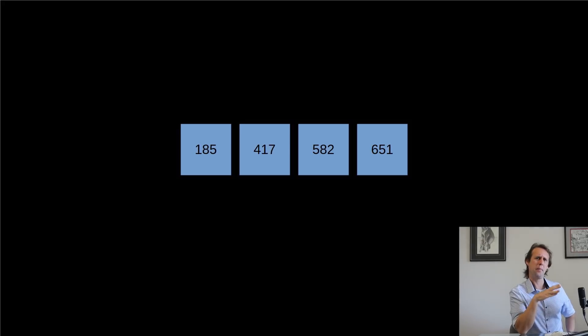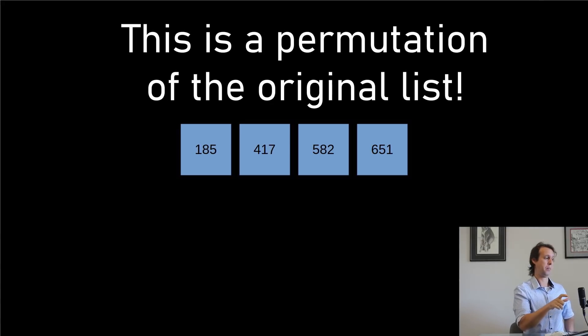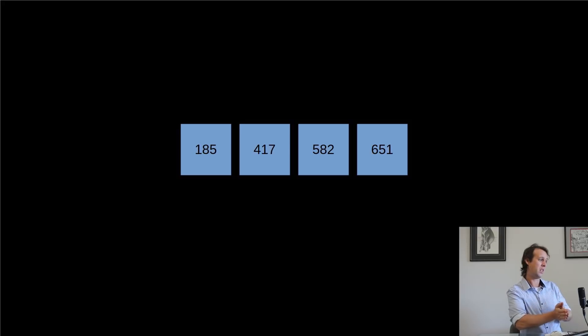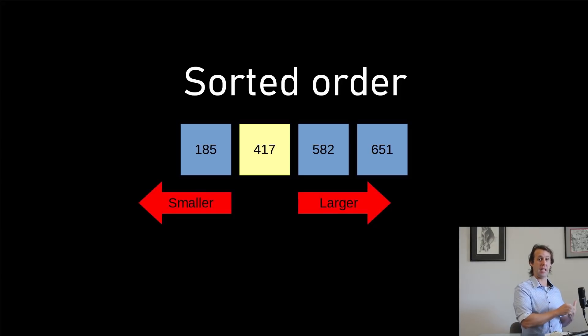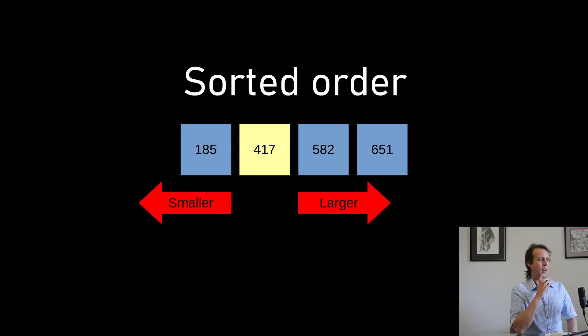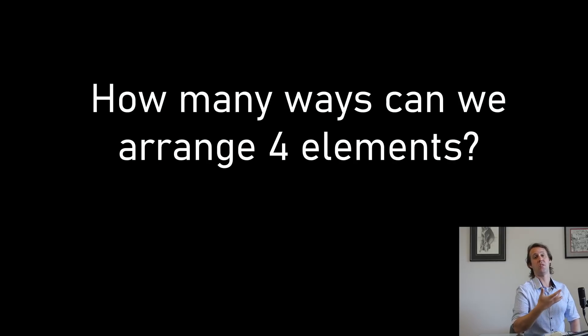But what did we do just then? What we did there is we found a permutation of the elements. So a permutation is just any arrangement of the elements. The sorted list is one particular permutation of those four elements. It happens to be the permutation where if you take one item, say the 417 just here, then in sorted order, every element to the left, you can be guaranteed, will be smaller than it, and every element to the right will be larger than it.